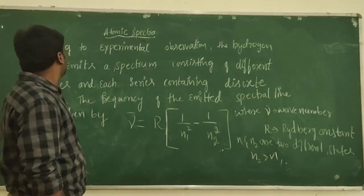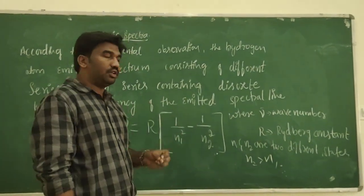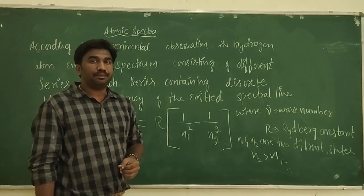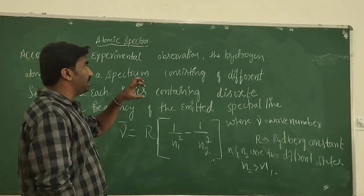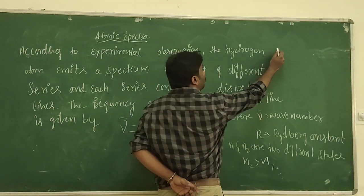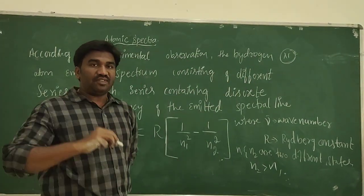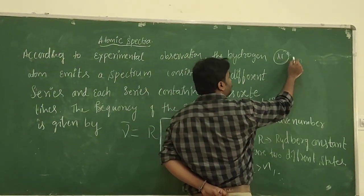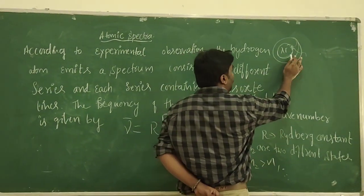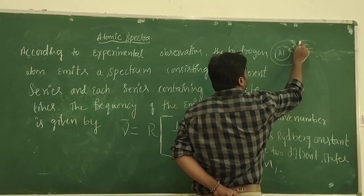The second failure is the atomic spectrum. The stability of the atom was later explained by Bohr, which you will study in atomic physics. Taking the hydrogen atom as reference: it consists of a central nucleus with one electron revolving around it. When we give extra energy to the electron, it jumps to a higher energy level, and when it returns to the ground state it emits radiation — this is the atomic spectrum.